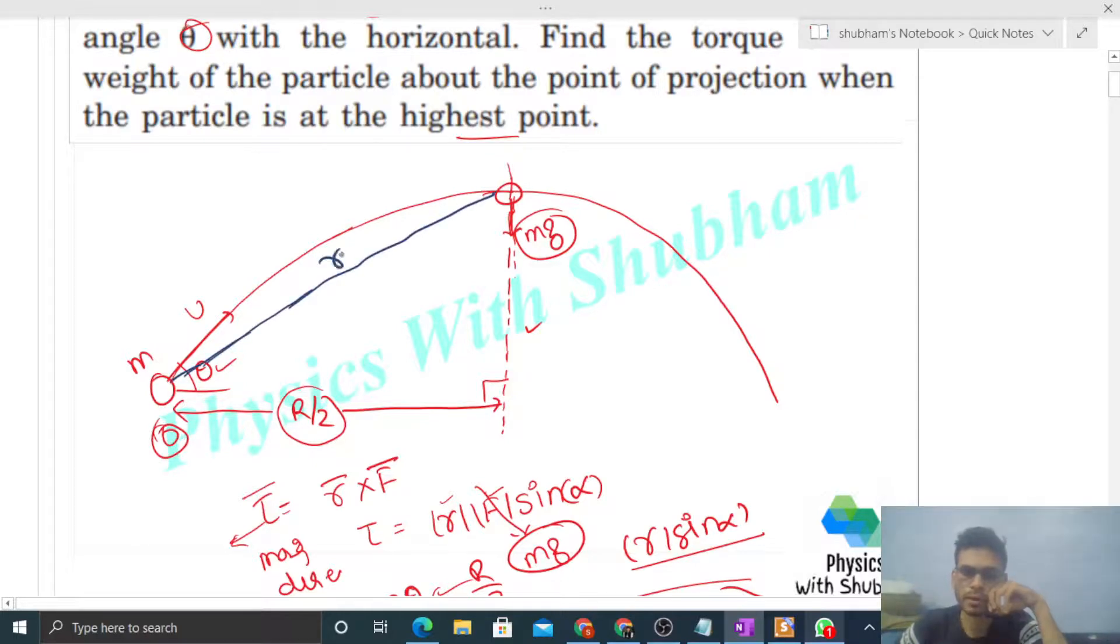Now, what is α? mg acts vertically downward, and this is the r vector. The angle between them is α.